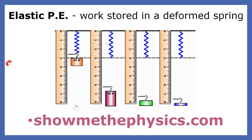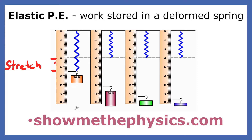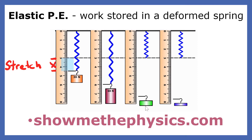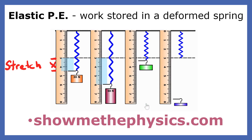Elastic potential energy is the work stored in a deformed spring. The potential energy stored in a spring depends upon the stiffness of the spring and the degree to which the spring is stretched or compressed.